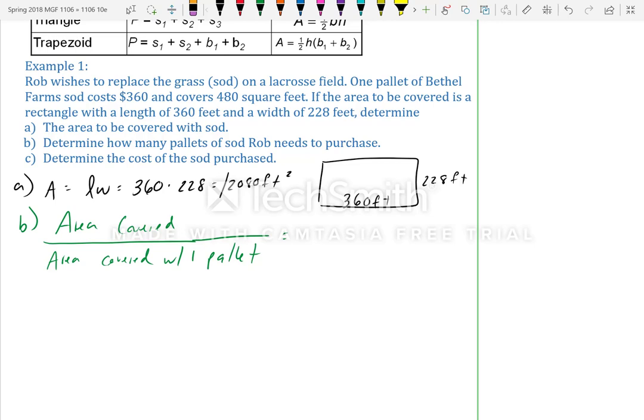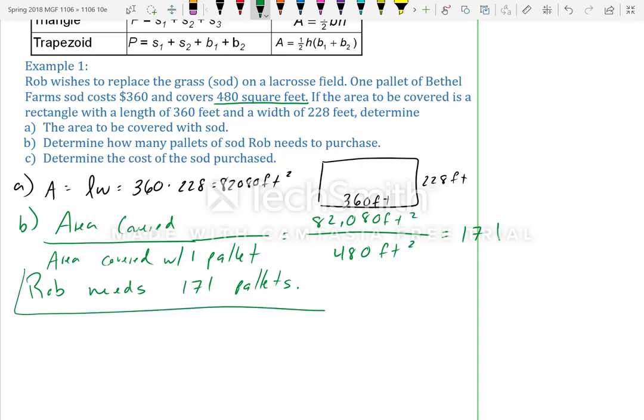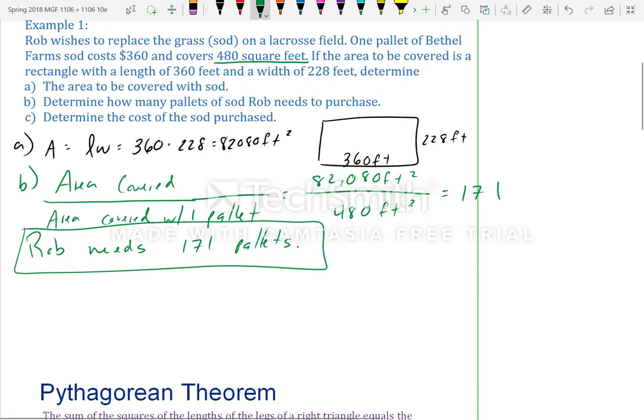Please forgive me, that is supposed to be 82,080, I don't know why I said 2,000. It's 360 times 228 is a big number. So, the area that needs to be covered is 82,080 square feet. And then, it tells us that per pallet, it covers 480 square feet. So, 82,080 divided by 480 square feet, and then we are left with 171. That means Rob needs 171 pallets. So, in order to cover the entire field, he needs 171 pallets.